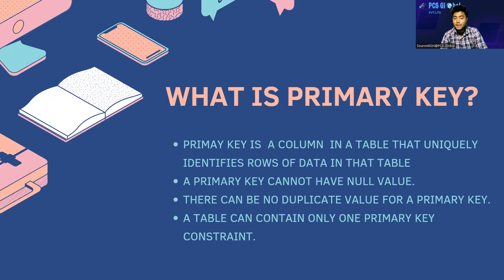What is a primary key? A primary key is a column in a table that uniquely identifies rows of data in that table. Some properties of primary keys are: a primary key cannot have null values, there can be no duplicate values for a primary key, and a table can contain only one primary key constraint.